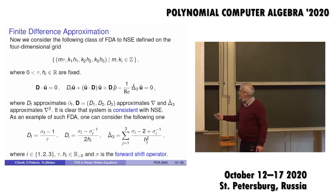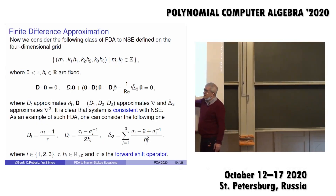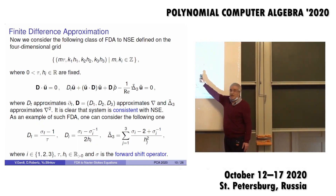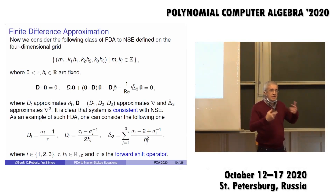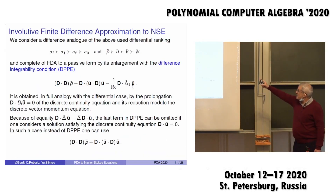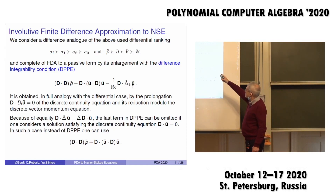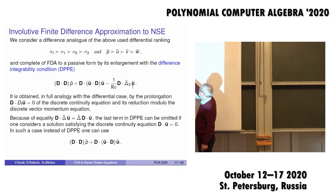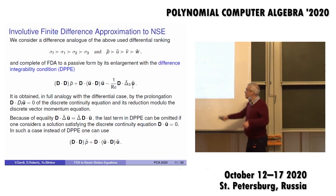We forget about the Poisson pressure equation for now, but we derive a difference analog. As soon as we fix the discretization of the Navier-Stokes equations, we apply difference algebra to obtain the integrability analog of the Poisson pressure equation. We select a ranking — a difference ranking similar to the differential one — and obtain this equation. This is the discrete Poisson pressure equation, which is correlated with derivatives. It is a scalar product of two vectors that discretize the partial derivatives.